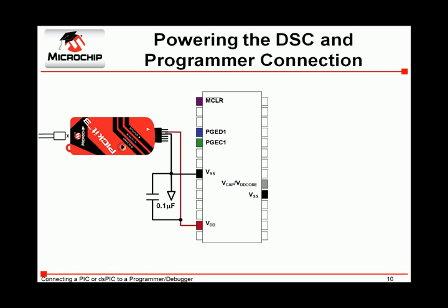You may have noted that the PICKIT-3 programmer debugger can also be used to power the circuit. For more information on this, please refer to the user's guide for Microchip's MPLAB IDE. The PGED1 pin is the data channel for Programming Debugging Communication Channel 1. Many devices will have multiple channel pins that can be used for this purpose, which provides the designer with a level of flexibility. Similarly, PGEC1 is a clock input pin for Programming Debugging Communication Channel 1.